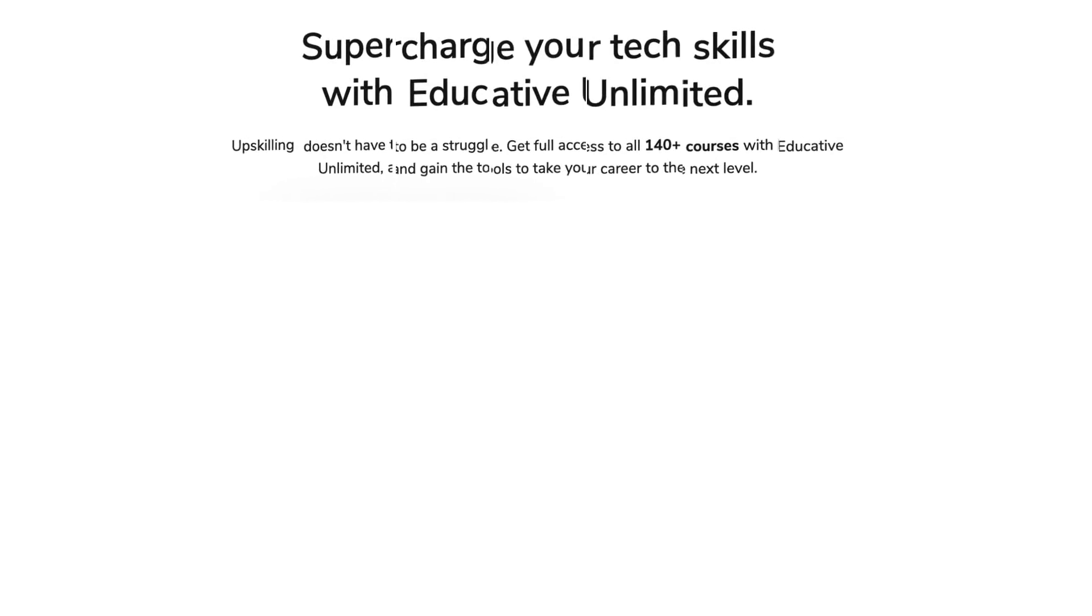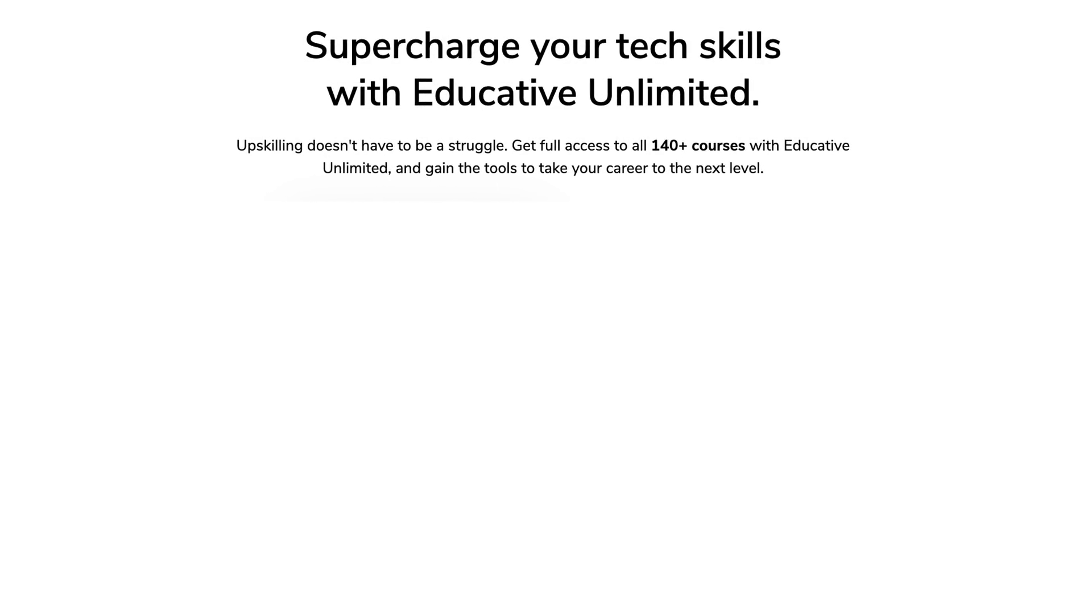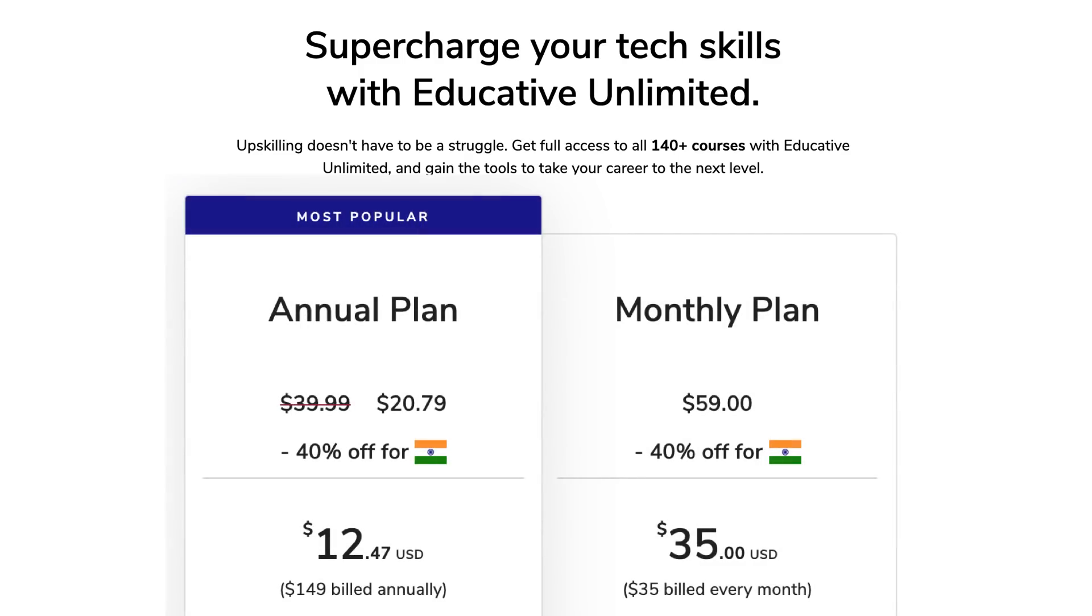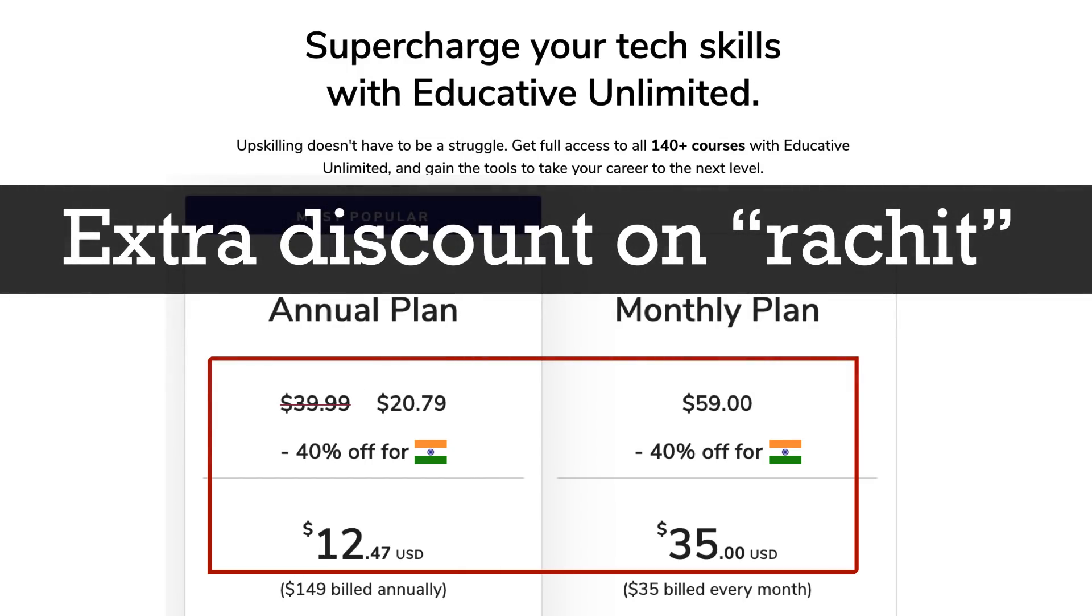Coming back to Educative. I think the Educative Unlimited is a good feature, I would say, because it allows you to gain access to 140 plus courses on their platform. So you can basically pay once. I mean annually or you can pay monthly. You can choose two plans. But once you do that, you do not have to buy individual courses. You get access to whole courses that they have on the platform, which is something which I really like. Now, you can see that the pricing is already discounted for India. You get 40% off, which makes it really cheap.